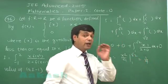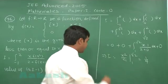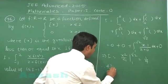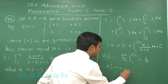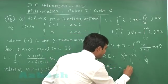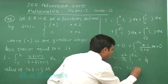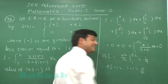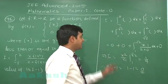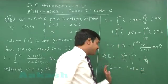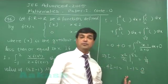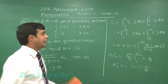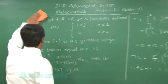The requirement is 4I - 1. Since I = 1/4, it is simply 4·(1/4) - 1 = 1 - 1 = 0. Hence the required result 4I - 1 is 0. Let us move to the next one.